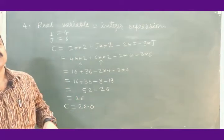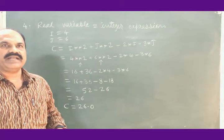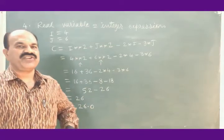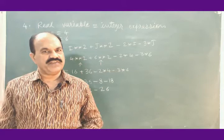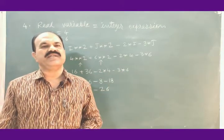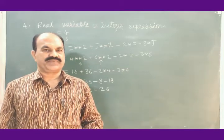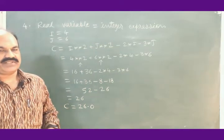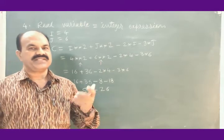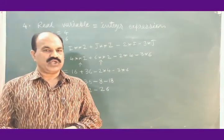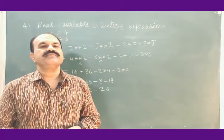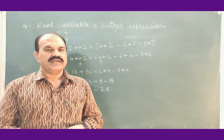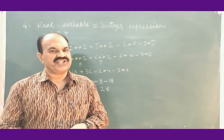This is about arithmetic statements, which are of 4 different types. The general format was given at the beginning of this article, and all 4 types have been discussed along with proper examples. This is about the arithmetic statements in Fortran. The next article is the Structure of a Fortran Program, which we shall discuss in the coming lecture. Thank you.